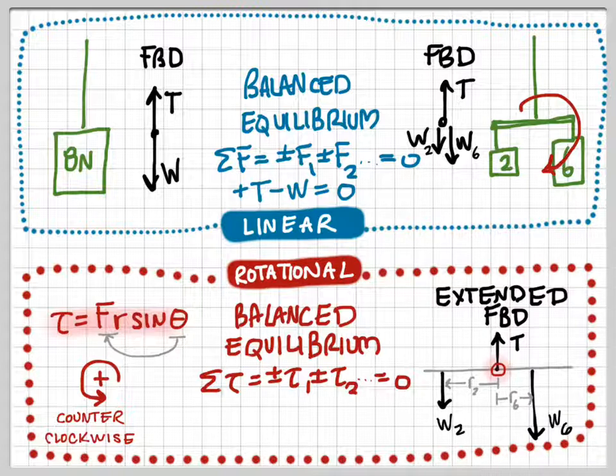So we need to calculate each of the torques associated with each of the forces on the object. We'll start with the weight 2, the 2 Newton weight. And we say the 2 Newton weight is R2 away from my reference point. And that's my force times my radius or my torque.